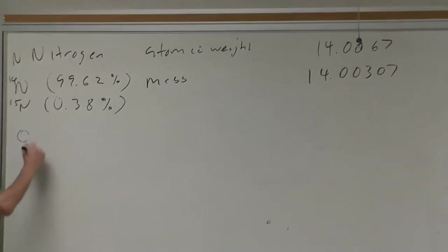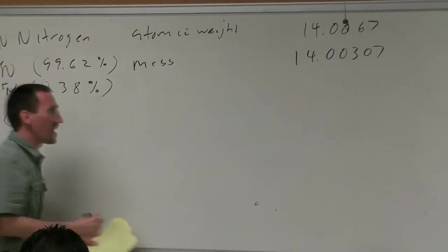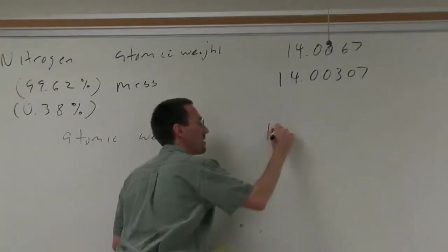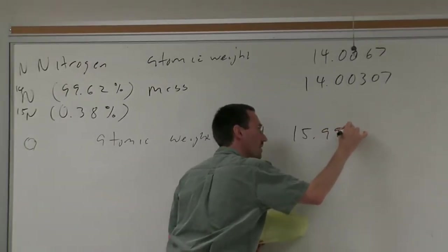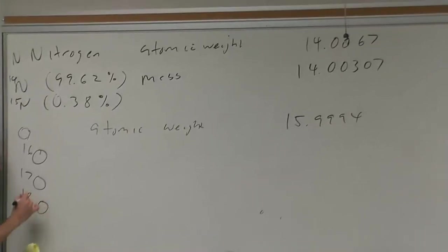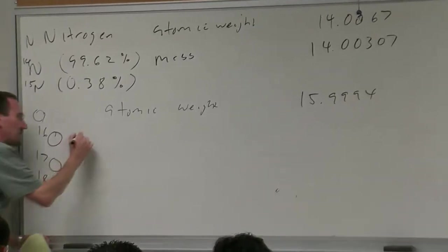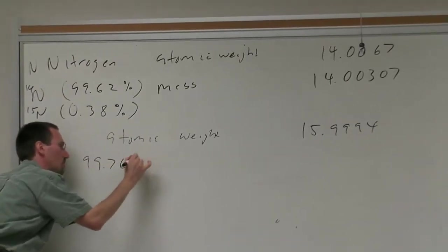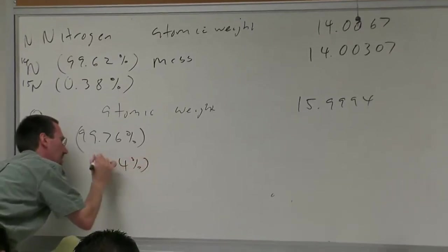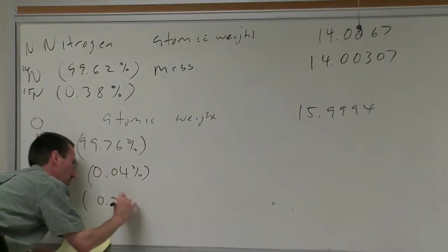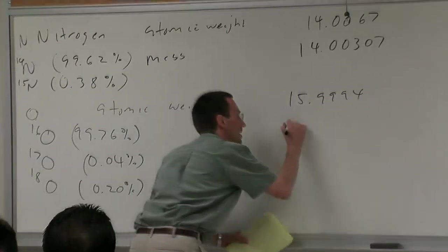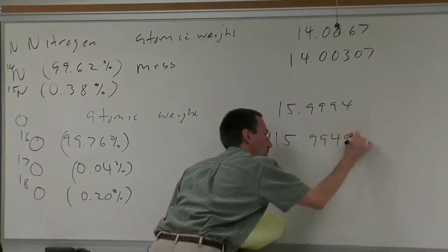Oxygen, the atomic weight is 15.9994, and yet oxygen is a mixture of oxygen 16, oxygen 17, and oxygen 18. Oxygen 16 predominates at 99.76%, there's just a tiny smidgen of oxygen 17 at 0.04% and a little bit of O18 at 0.20%. The mass for oxygen is 15.99491.